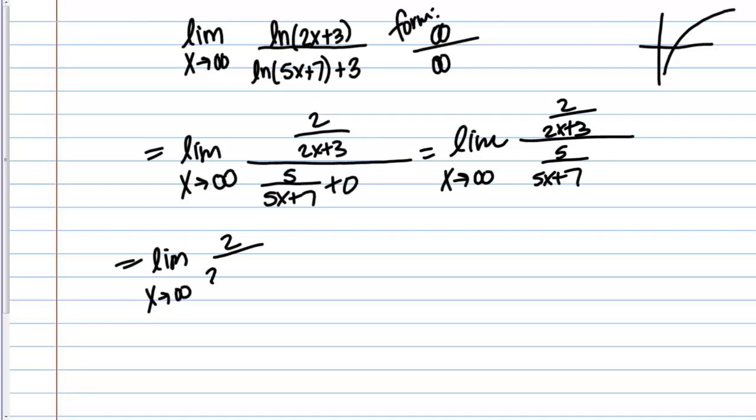This is equivalent to this. I multiply by the reciprocal. I have then the limit as x goes to infinity of 2 times the quantity 5x plus 7 over 5 times the quantity 2x plus 3.